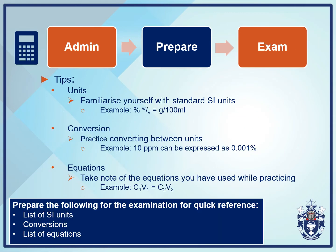We have the following tips for you while preparing for the examination. Take note of the units — for example, a percentage weight per volume can also be expressed as X grams per 100 mils. You may need to convert between units — for example, 10 ppm or parts per million can also be expressed as a percentage. Very importantly, take note of all the equations you have used, for example C1V1 equals C2V2. We suggest that you create a number of sheets to take into the exam: one for equations, one for conversions, and one for SI units.